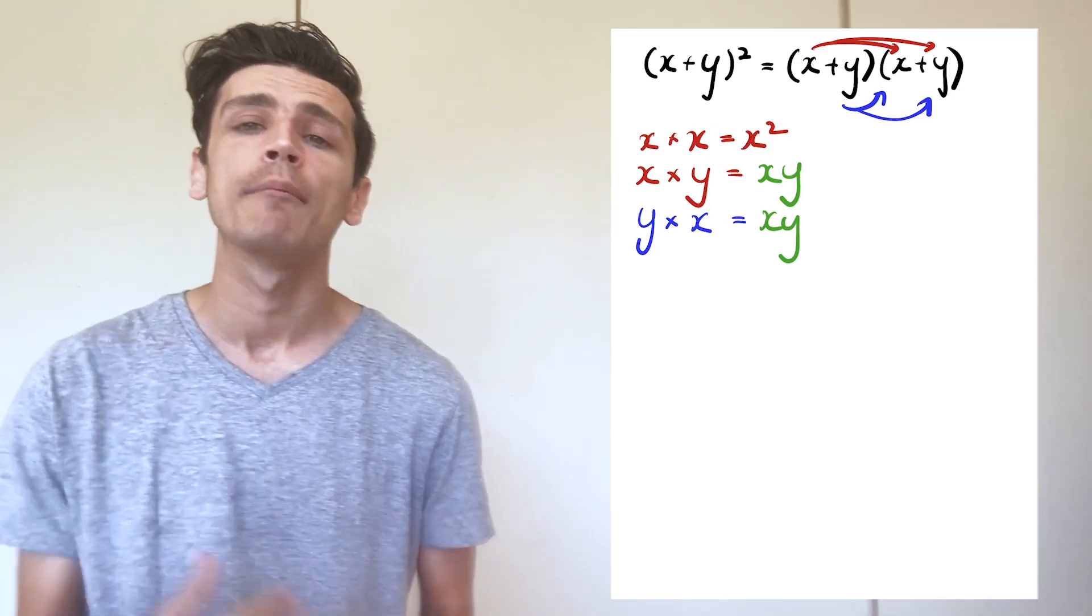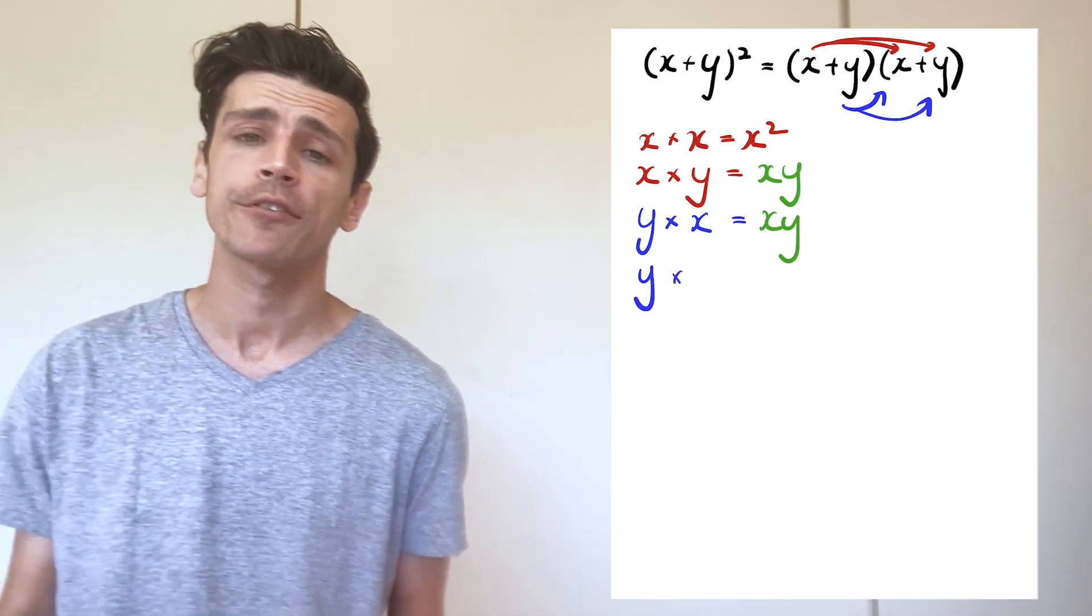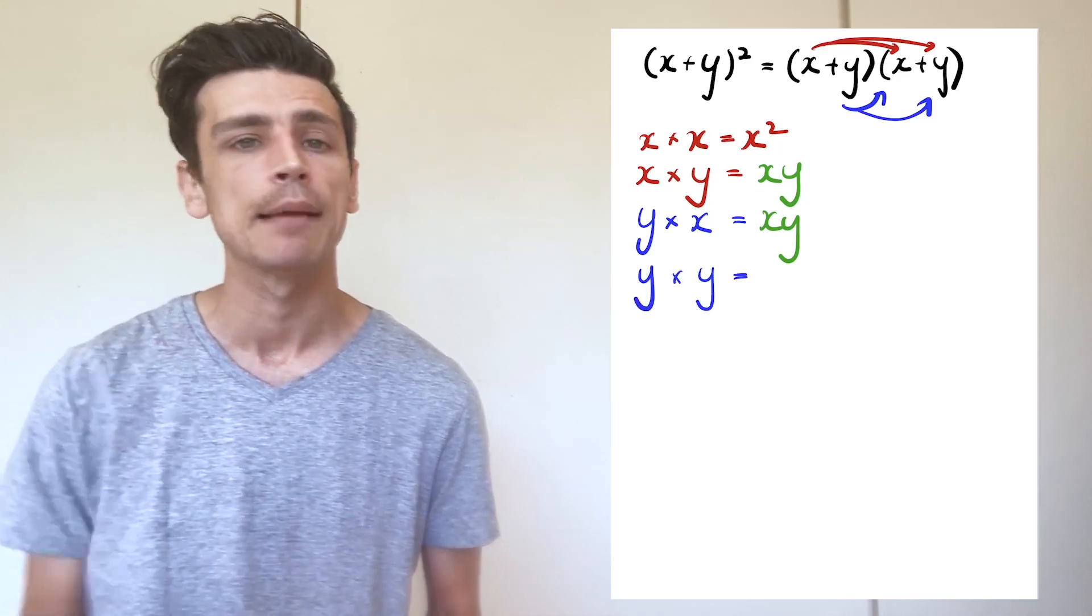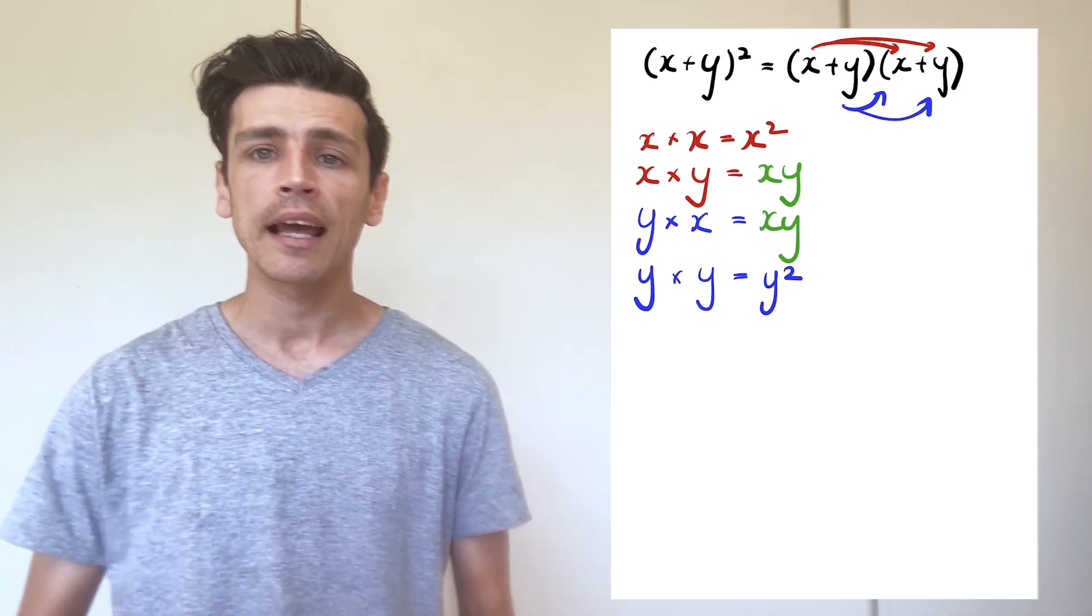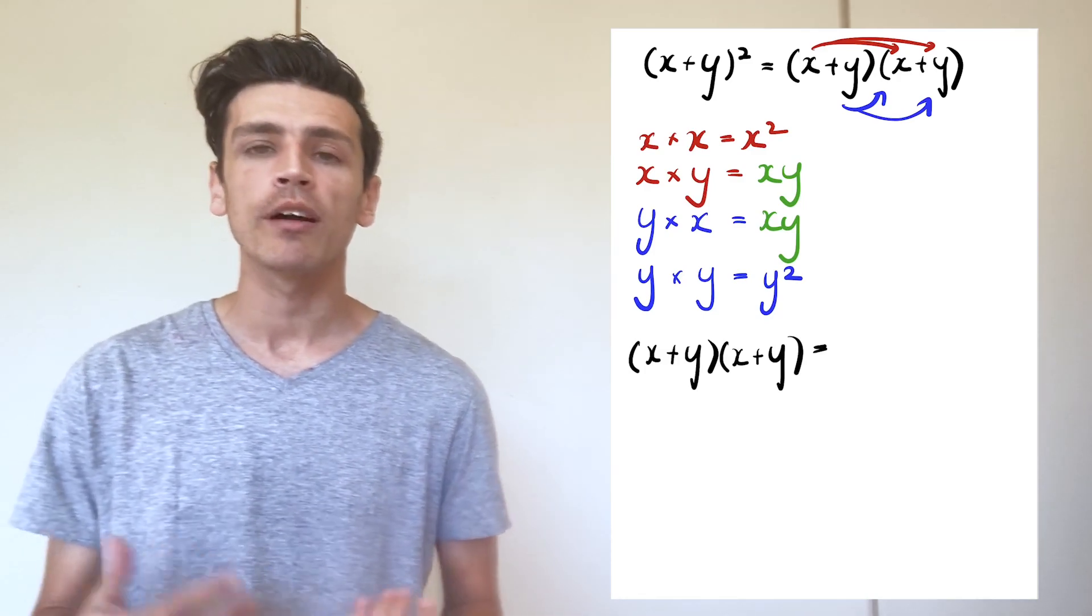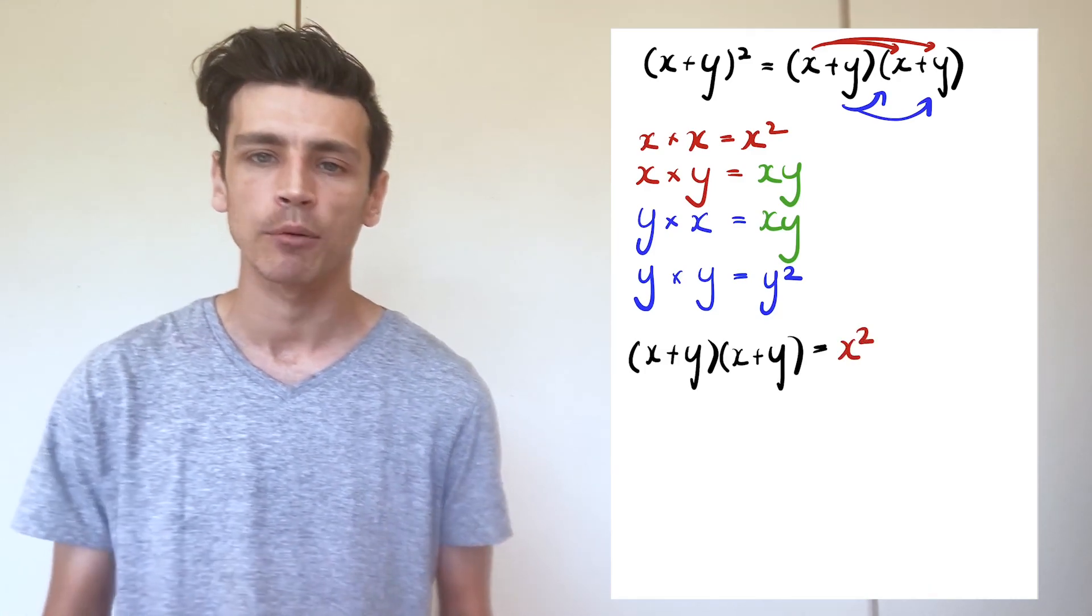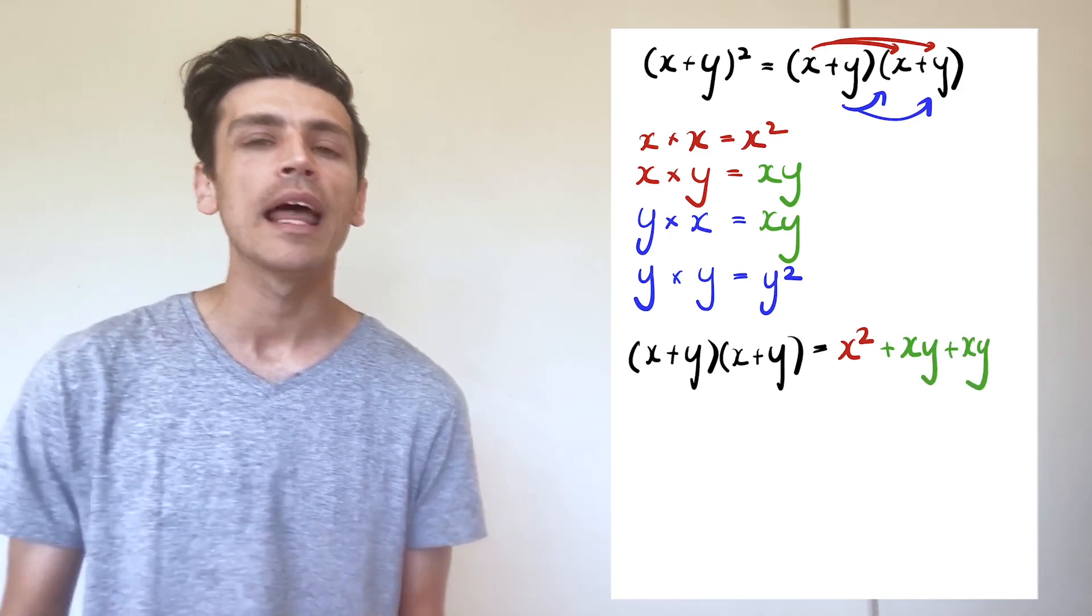Now our last one is y multiplied by y, and y multiplied by y is just y to the power of 2 or y squared, just the same as we did with x multiplied by x. So we've got x squared plus xy plus xy plus y squared.